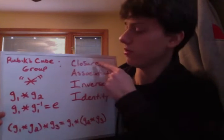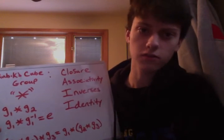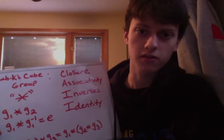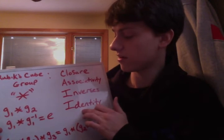Now that we've defined our group and a binary operation on it, we must make sure that the properties of the algebraic structure of a group hold. Those well-known properties are closure, associativity, the existence of inverses for all elements of the group, and the existence of an identity element.